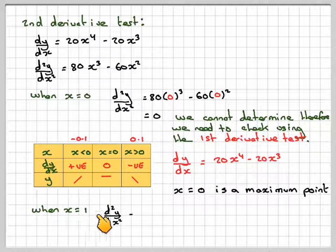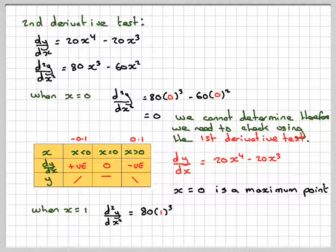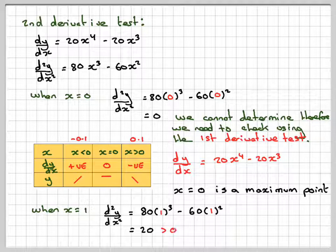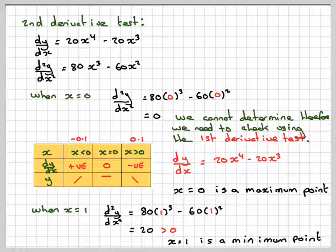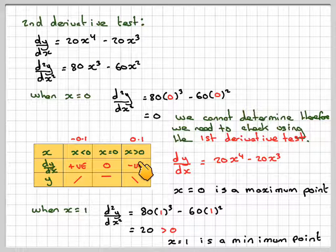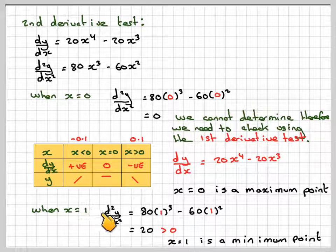For x = 1, we go back to the second derivative. It's 80 × 1³ - 60 × 1² = 80 - 60 = 20, which is greater than 0. Therefore x = 1 is a minimum point. To summarise: x = 0 gave a second derivative of 0 so we used the first derivative test to confirm it's a maximum. For x = 1, the second derivative is positive, confirming it is a minimum.